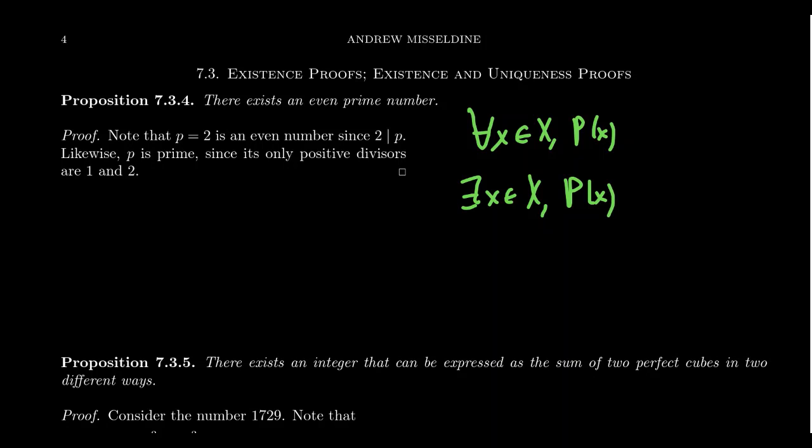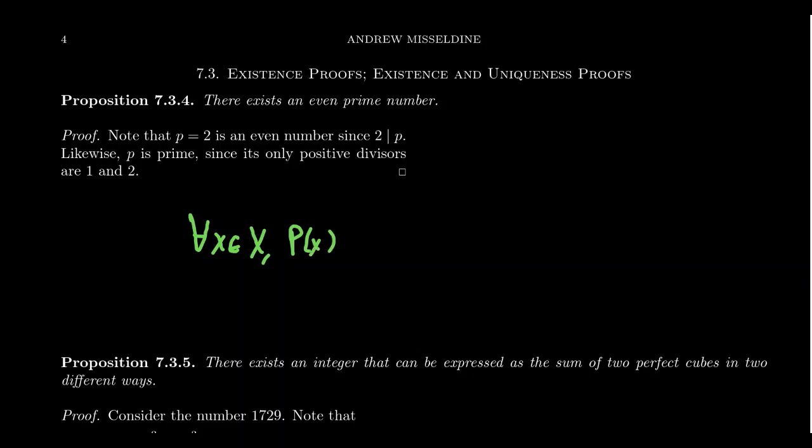Now, it turns out that we've essentially already taken the universal quantifier. That is, we've already taken care of that because of the following observation. The proof of a universal statement is essentially just a conditional statement. So if you take that statement again, for all X inside of X, we have that P of X holds. This statement right here is logically equivalent to the statement that if X is inside of X, then P of X holds.